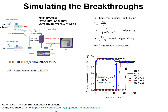With these parameters, I can carry out the breakthrough simulations, ignoring the influence of intracrystalline diffusion. For the three temperatures — 298 K, 323 K, and 348 K — the breakthrough simulations are shown here. Comparing these breakthrough simulation data with the corresponding breakthrough experiments, there is excellent agreement between the two sets. This is how I normally evaluate the separation efficacy of a given MOF for a given separation task. Thank you.